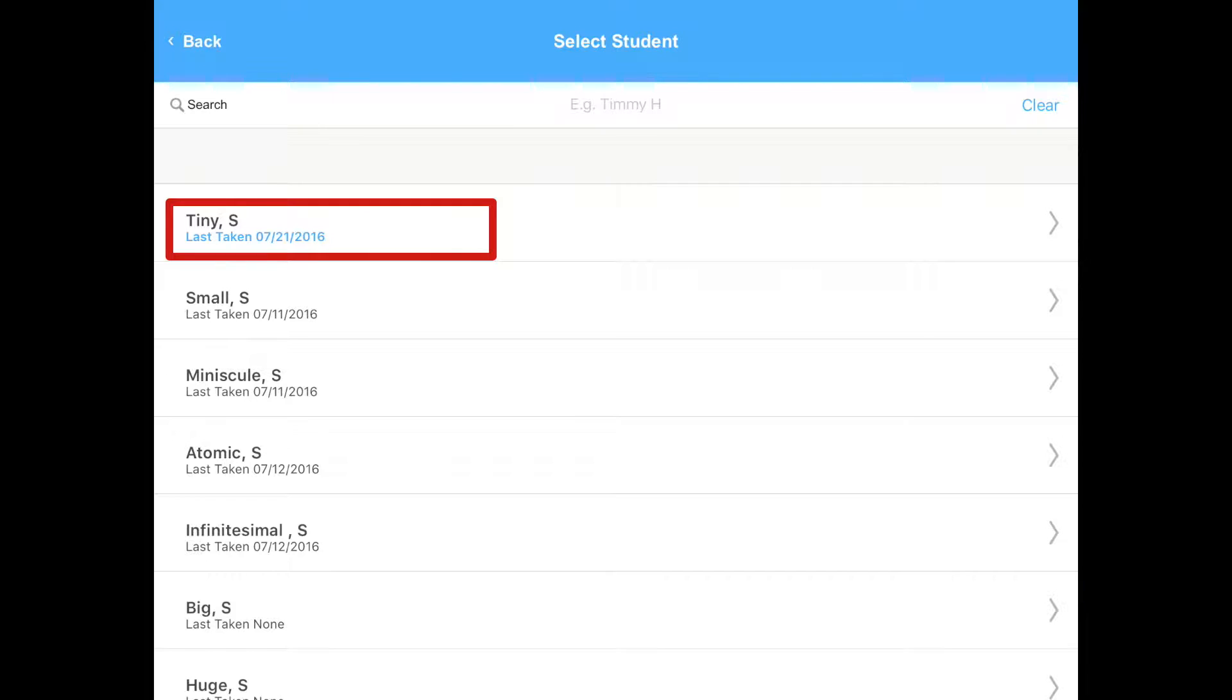If the student has taken the test in the last seven days, he or she will be in blue for ease of recognition in case you test students in groups or intermittently. If the student has not been tested in the last seven days, he or she will be in gray. The date of the last test will always show.